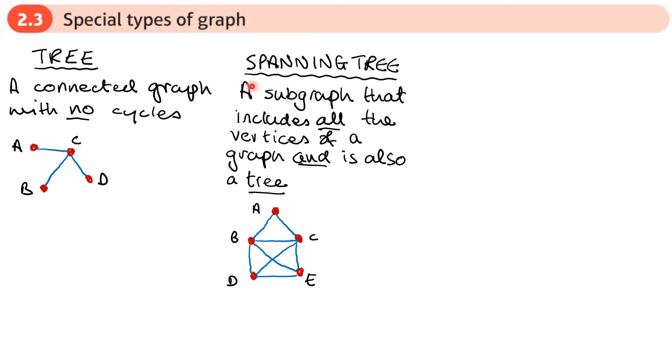So next thing we can look at is this spanning tree. It's a subgraph that includes all the vertices of a graph. It is also a tree. And if it includes all the vertices and it's a subgraph, that means it doesn't include all the edges. And if it's also a tree, it means that there can't be any cycles.